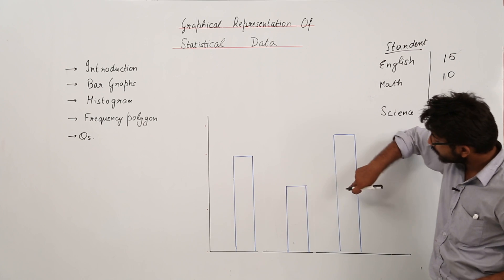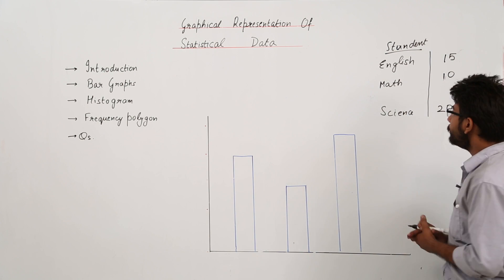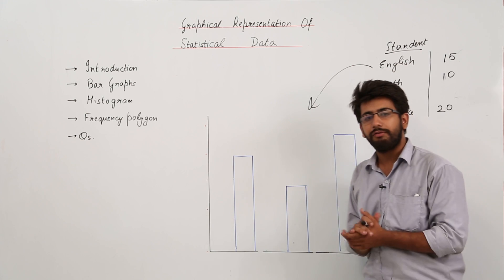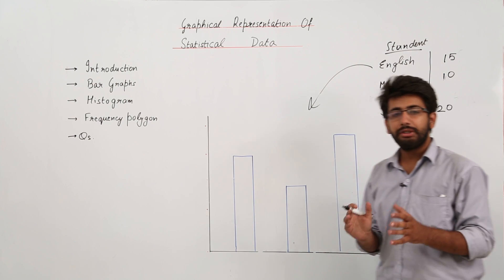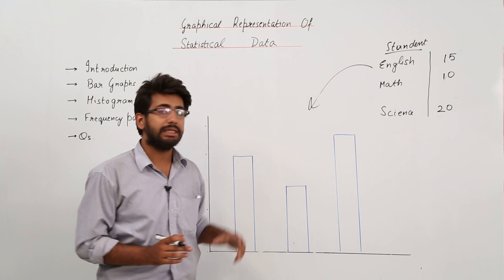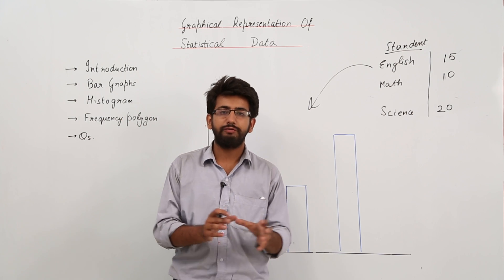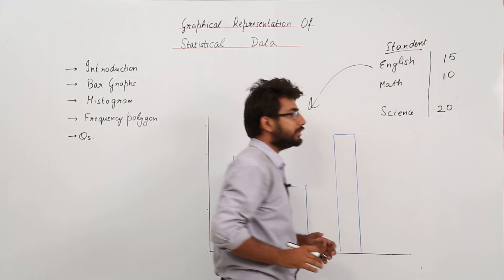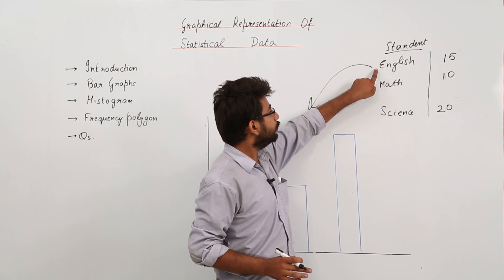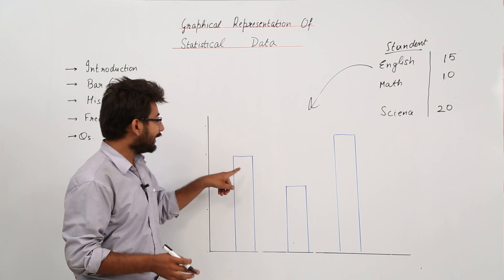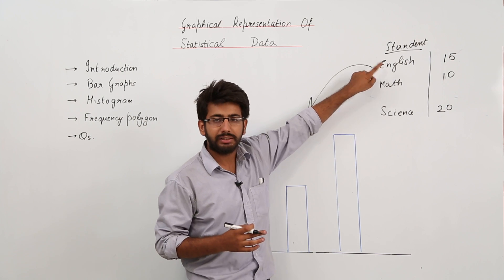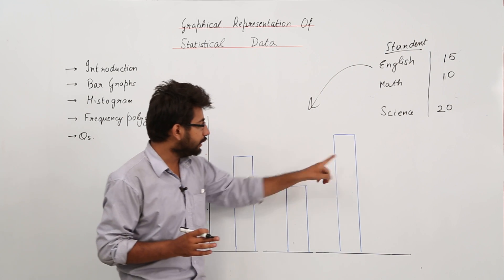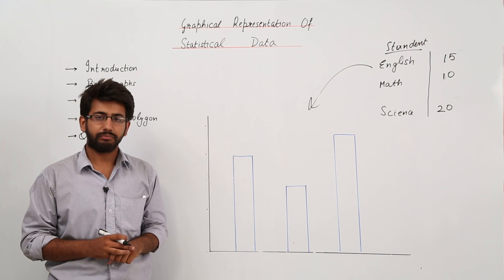Also remember, the distance between the bars is also fixed. To convert the tabular representation into graphical form, the height of each rectangle represents the value of each element. We have three elements — 15, 10, and 20 — corresponding to English, Math, and Science, so we will make one rectangle for each subject.